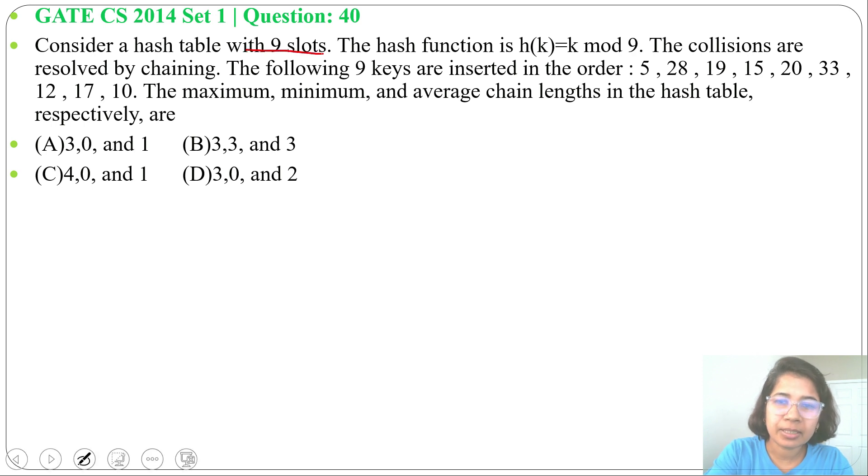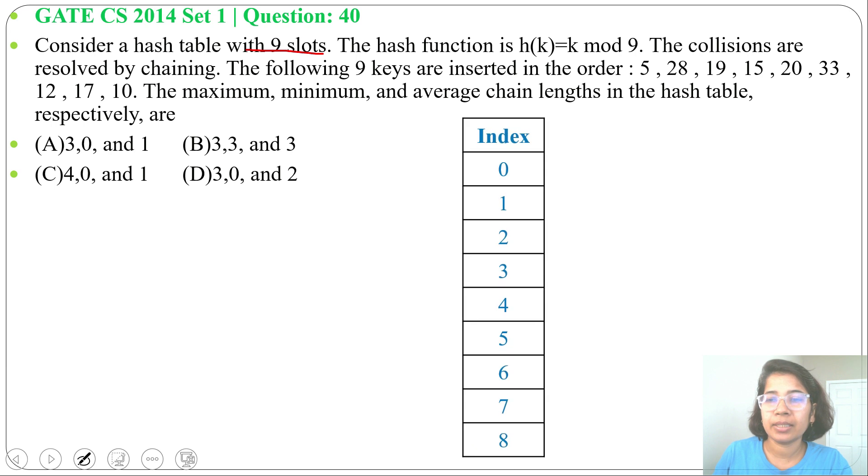Here hash table size is 9. So index will be 0 to 8, 0 to m minus 1. m equals 9. 5 divided by 9, remainder will be 5. So 5 will insert at index 5.